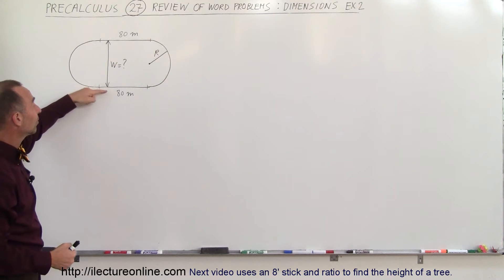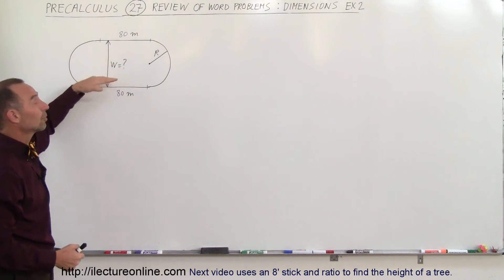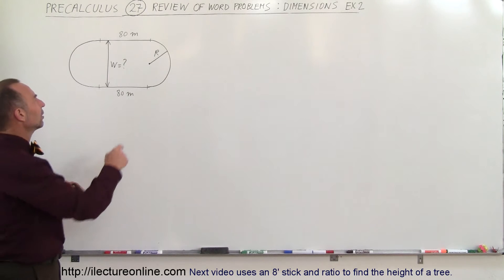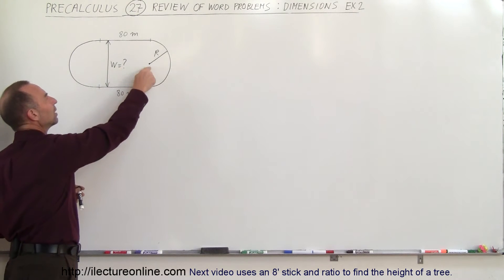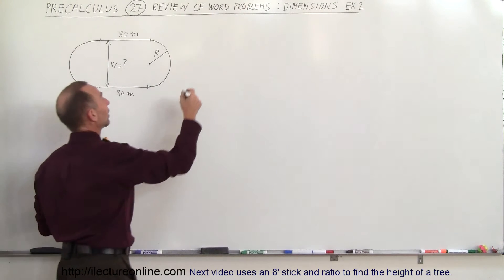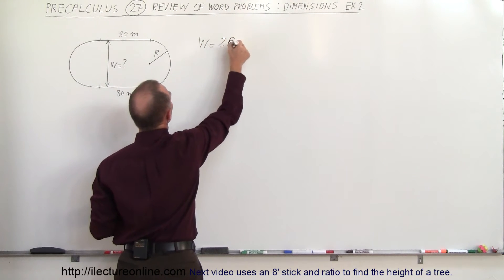In other words, what is the distance between one end and the other end of the track in the width dimension? How do we do that? First of all, we can see there's a relationship between the width and the radius of the semicircles on the end of the tracks, so the width is equal to two times the radius.